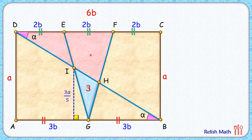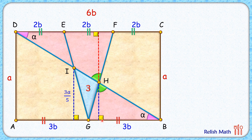For the second triangle, the two pink triangles again share equal alpha angles and vertically opposite angles, so these triangles are also similar. The ratio of the sides is 4 to 3, which equals the ratio of the heights. So the red line segment to blue line segment ratio is 4:3, giving heights of 4a/7 and 3a/7.